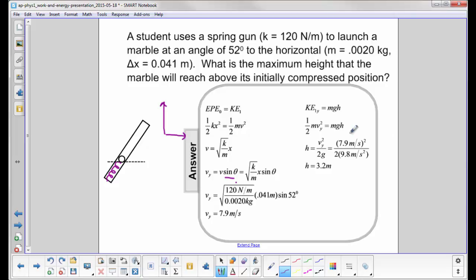So we now have one-half mvy squared equals mgh. The m's cancel out. We have h equals vy squared over 2g. Substitute in the numbers, and we find that we reach a height of 3.2 meters over the initially compressed position. Again, that's why it was so important to set a reference line at this point where there was zero gravitational potential energy for the marble.